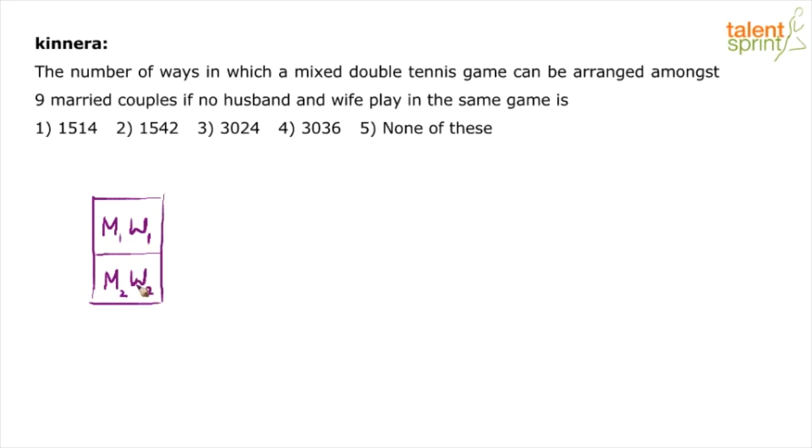You have to choose two men and two women and make a mixed double tennis game in such a way that no husband and wife play in the same game. Husband and wife should not be involved in the same game. Meaning, if M1 and W2 should not be husband and wife, similarly M2 and W1 should not be husband and wife. M1 and W1 should also not be husband and wife. They should not make a married couple out of these four persons.